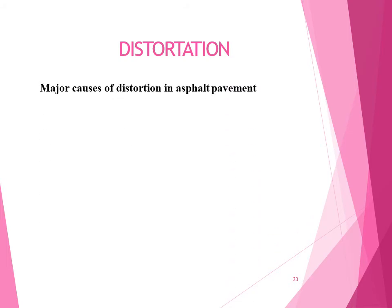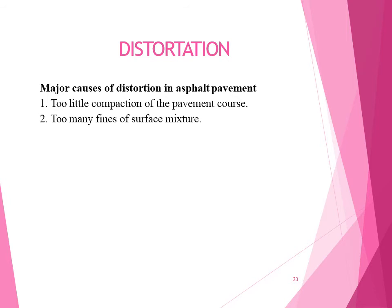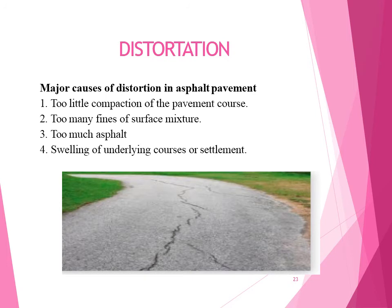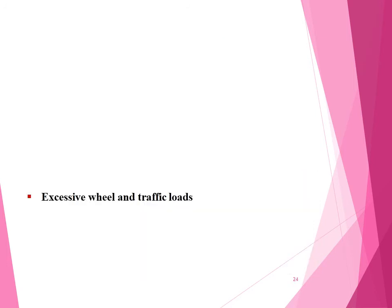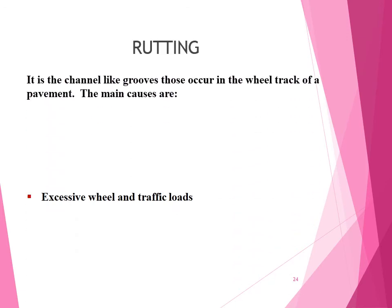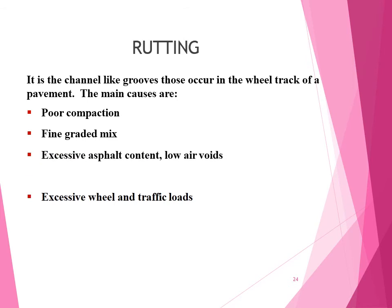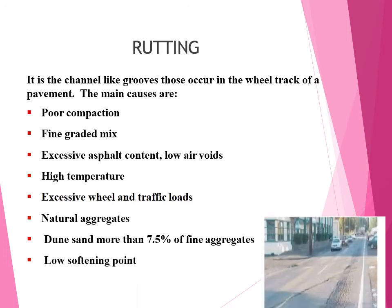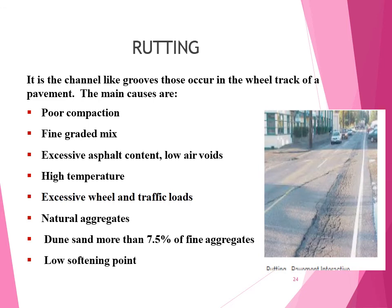Distortion: major causes include too little compaction of the pavement course, too many fines on the surface mix, too much asphalt, and swelling of underlying courses or settlement. Rutting consists of channel-like grooves occurring in the wheel tracks of a pavement. Main causes are poor compaction, fine-graded mix, excessive asphalt content or low air voids, high temperature, excessive wheel and traffic loads, natural aggregates, dune sand more than 7.5% of fine aggregates, and low softening point of bitumen.